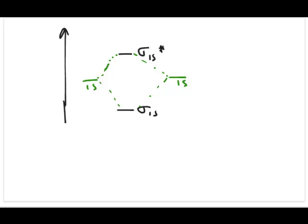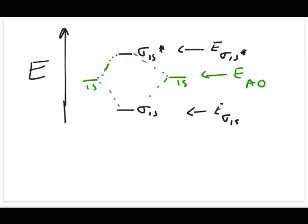One reason the sigma 1s star is called antibonding is because it's higher in energy compared to the atomic orbital. The energy of the sigma 1s is actually lower than the energy of the atomic orbital, so if your electron is in the bonding orbital, you've lowered the energy of the system — the process tends to go from atomic form to molecular form. However, the antibonding orbital is higher in energy than the atomic orbital, so electrons placed there would prefer to stay as separate atoms. That's why one MO is called bonding — electrons there encourage bonding — and the other is antibonding, where bonding is not preferred.